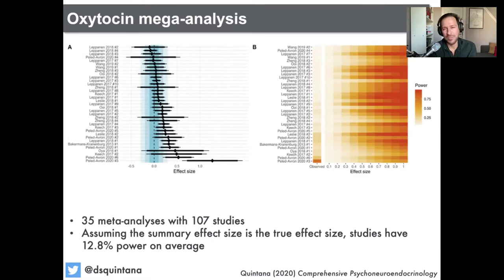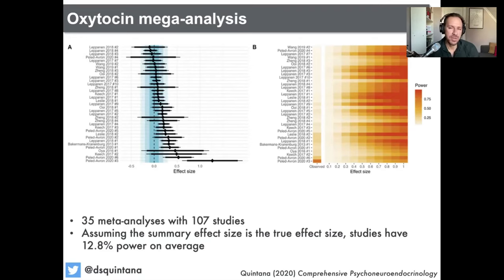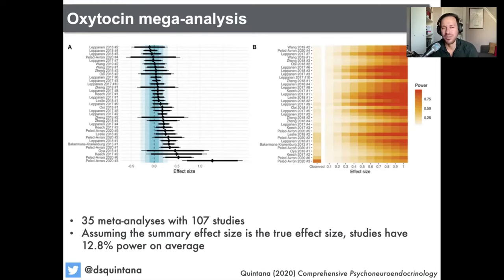Panel B demonstrates that for this particular research field, the study designs cannot detect a wide range of effect sizes. But I want to bring your attention to panel A, where I ran statistical equivalence analyses. Not only did the study designs mean you couldn't detect a wide range of effect sizes, but it also means you couldn't reject a wide range of effect sizes — which essentially means the results are inconclusive. We can't say there's data to support these hypotheses, and we can't say there's data to reject them either.